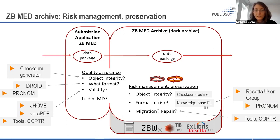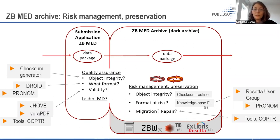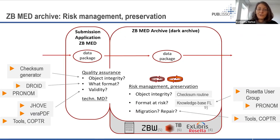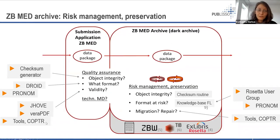Rosetta has a knowledge base collecting different formats and allowing us to add risks for each format. When something goes wrong during quality assurance — either at ingest or inside the archive — we have to undertake a detective journey to find out what error message a validation or migration tool is giving us. This investigative work is a significant part of digital preservation.